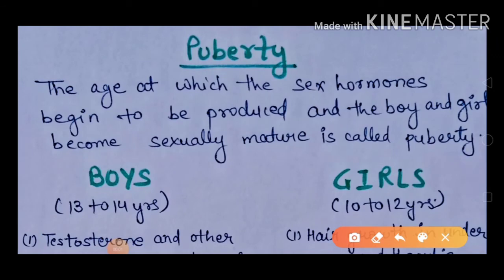Hello students, today my topic is Puberty. The age at which sex hormones begin to be produced and boys and girls become sexually mature is called Puberty. It means the age when sex hormones start to develop sexually mature individuals, and secondary sex characters are developed. This condition is known as Puberty.